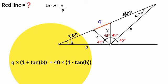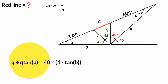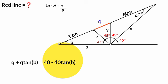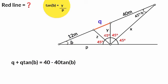Cross multiplying now: Q times (1 plus tan B) equals 40 times (1 minus tan B). Expanding: Q plus Q·tan B equals 40 minus 40·tan B.